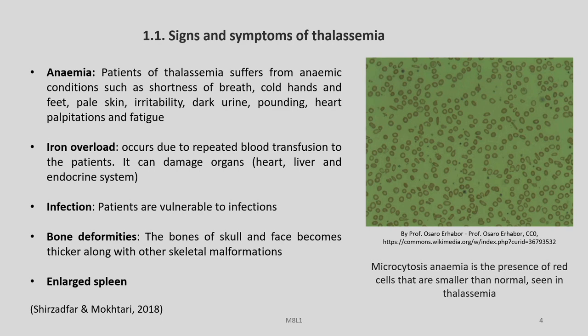With respect to anemia, thalassemia patients suffer from conditions such as shortness of breath, cold hands and feet, pale skin, irritability, dark urine, pounding heart, palpitations, and fatigue. There is always iron overload which occurs due to repeated blood transfusion to the patients, which can damage organs, and patients are vulnerable to various infections. The bones of skull and face become thicker along with other skeletal malformations.